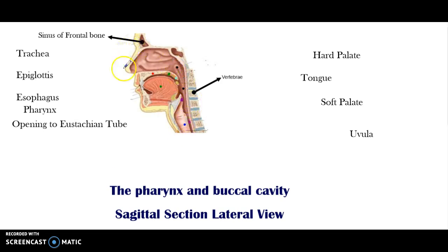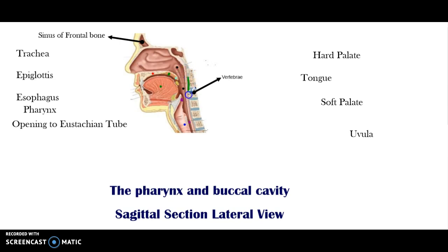We're starting with this particular view that you have in front of you right now, and this view is a sagittal section of the head, of the cephalic region. Basically, it splits the skull at the nose section and you're looking at it from a lateral view. This is the sinus of your frontal bone, your vertebrae, and the intervertebral discs in between. Your spinal cord would be right here, colored in green. The area we're focused on is this section right here — we want to know how food is affected as it enters this area.